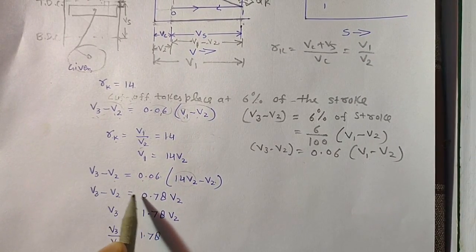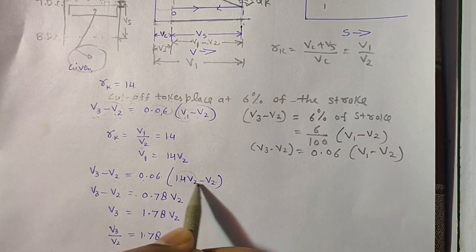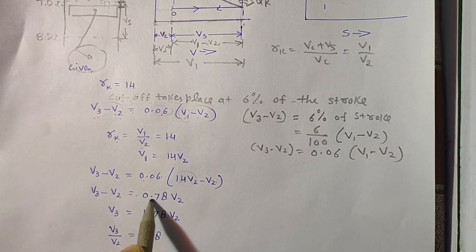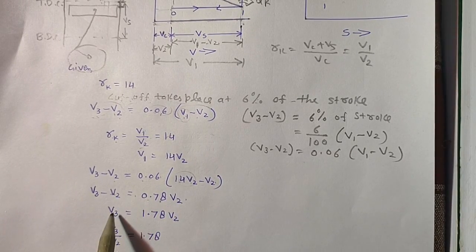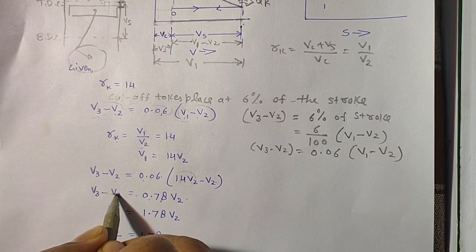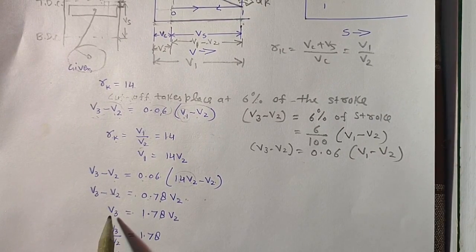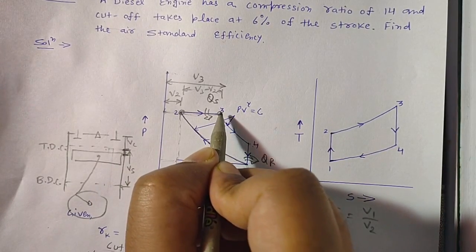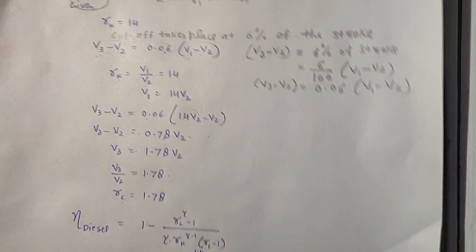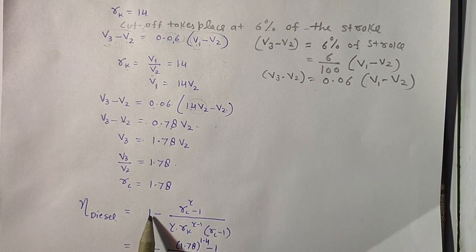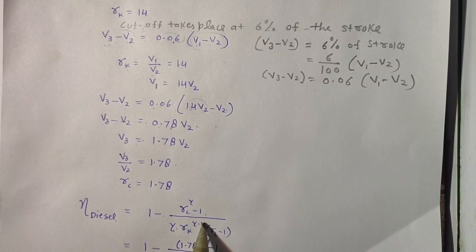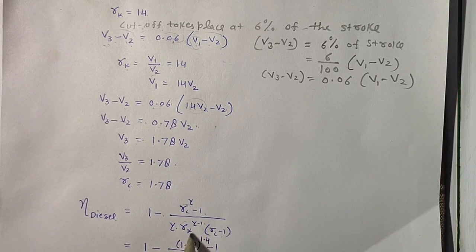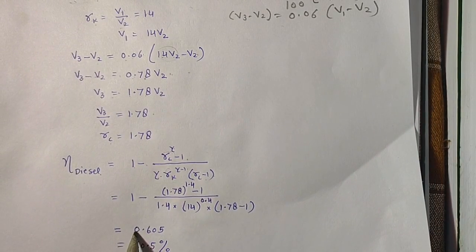Therefore V3 = 0.78 V2 + V2 = 1.78 V2, so the cut-off ratio RC = V3 by V2 = 1.78. This is where combustion starts at point 2 and ends at point 3. Using the diesel efficiency formula — eta equals 1 minus (RC^gamma minus 1) divided by (gamma times RK^(gamma-1) times (RC minus 1)) — with RC = 1.78, RK = 14, and gamma = 1.4, the air standard efficiency is 0.605, or 60.5%.